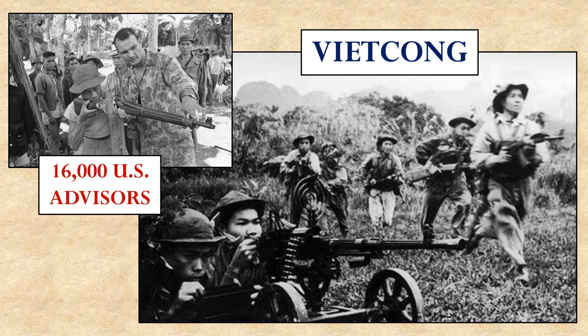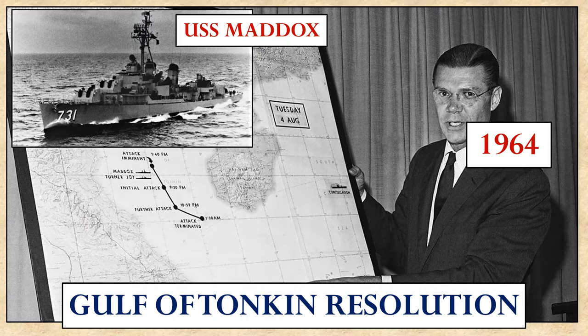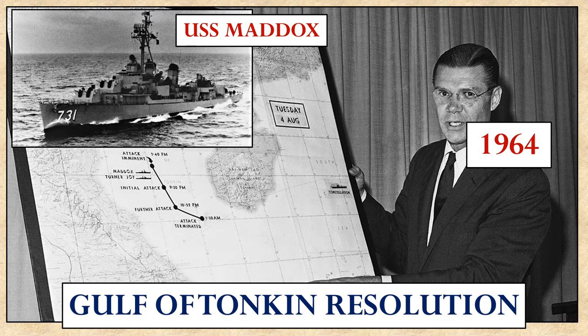The United States military advisors were supposedly there just to train the South Vietnamese to fight for themselves — the United States was trying to avoid getting bogged down in another foreign war. But then in 1964, an excuse for war happened in the Gulf of Tonkin off the coast of Vietnam, when the USS Maddox reported that it was under attack by North Vietnamese boats. There is some concern that the USS Maddox's reports were either falsified or mistaken. Nonetheless, they became the excuse for the United States to declare war on North Vietnam and begin deploying combat troops to the region. This is the beginning of US involvement in the Vietnam War.